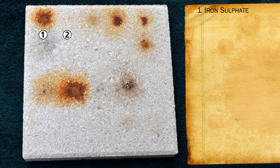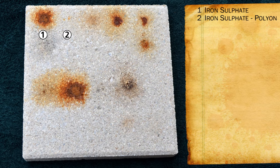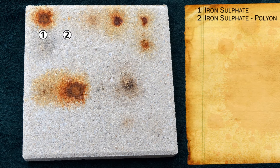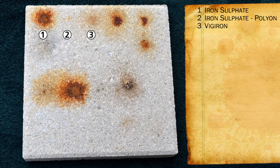Number two is polymer-coated iron sulfate — Polyon. This is a Polyon product and we see simply by polymer-coating that iron sulfate, we produce almost no staining. So there's the value of polymer-coated iron sulfate. Number three is an organic form of iron in the form of VIG iron. It produces very little staining.